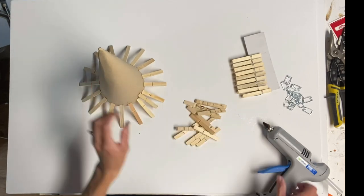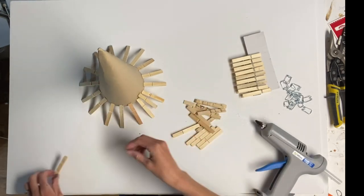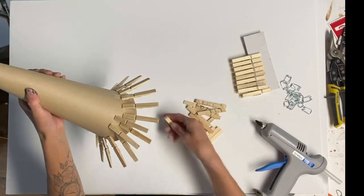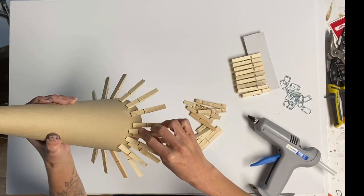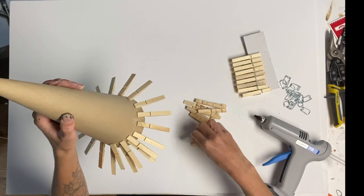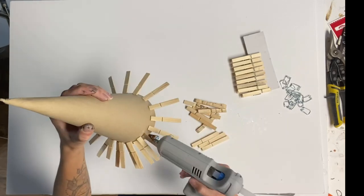And then I just move to the next row. I'm just gluing the clothespins on an angle and going around the tree cone.